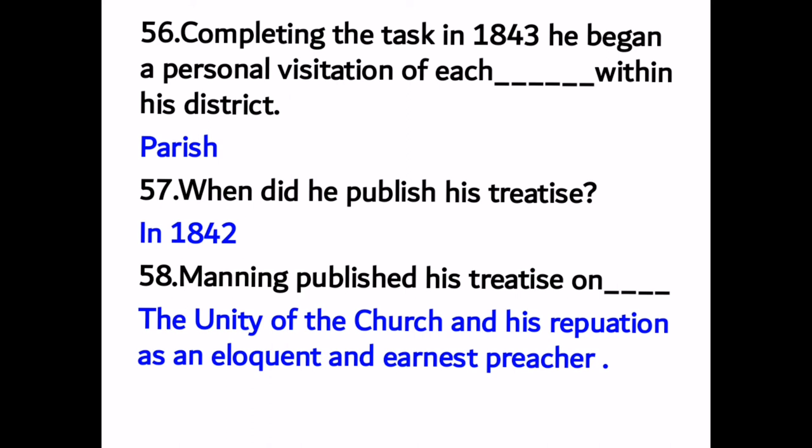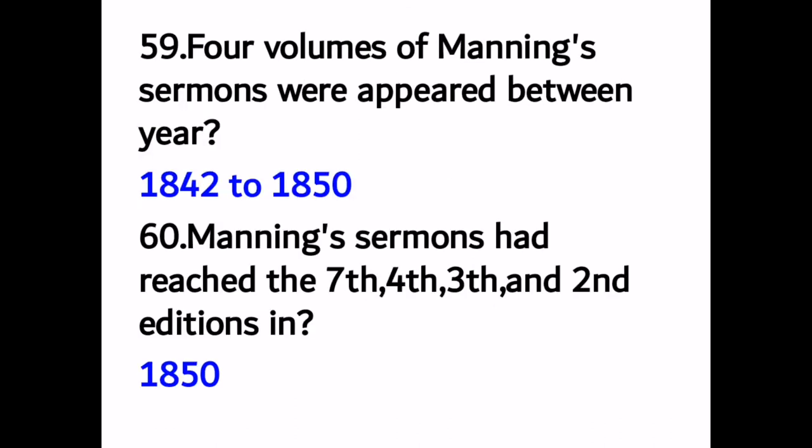Number fifty-eight: Manning published his treatise on 'The Unity of the Church,' establishing his reputation as an eloquent and earnest preacher. Number fifty-nine: four volumes of Manning's sermons appeared between 1842 and 1850.